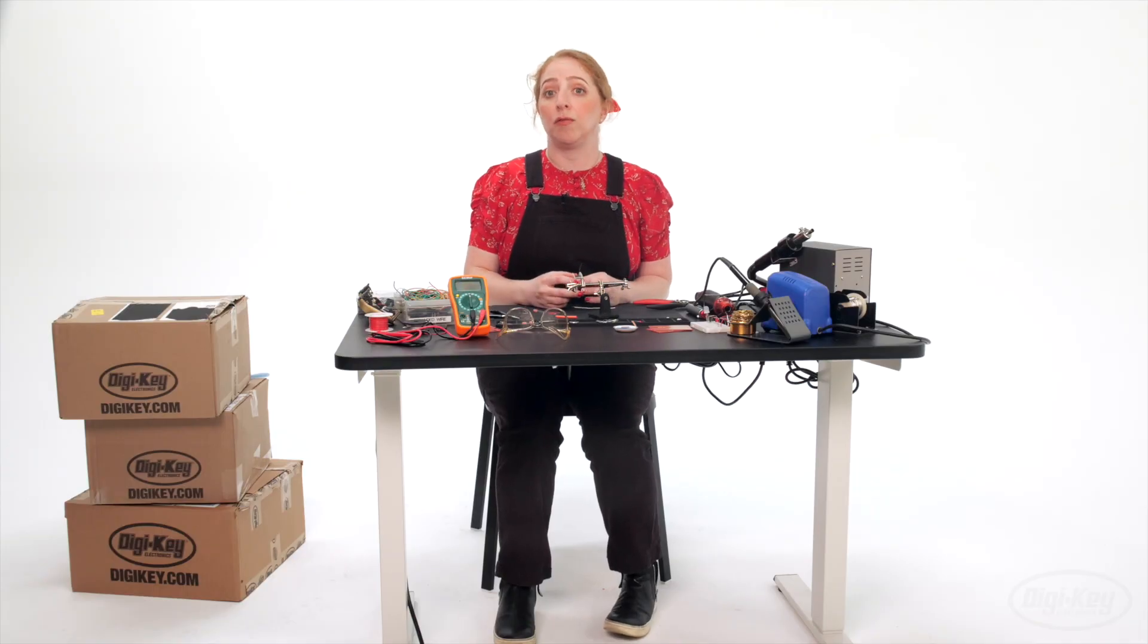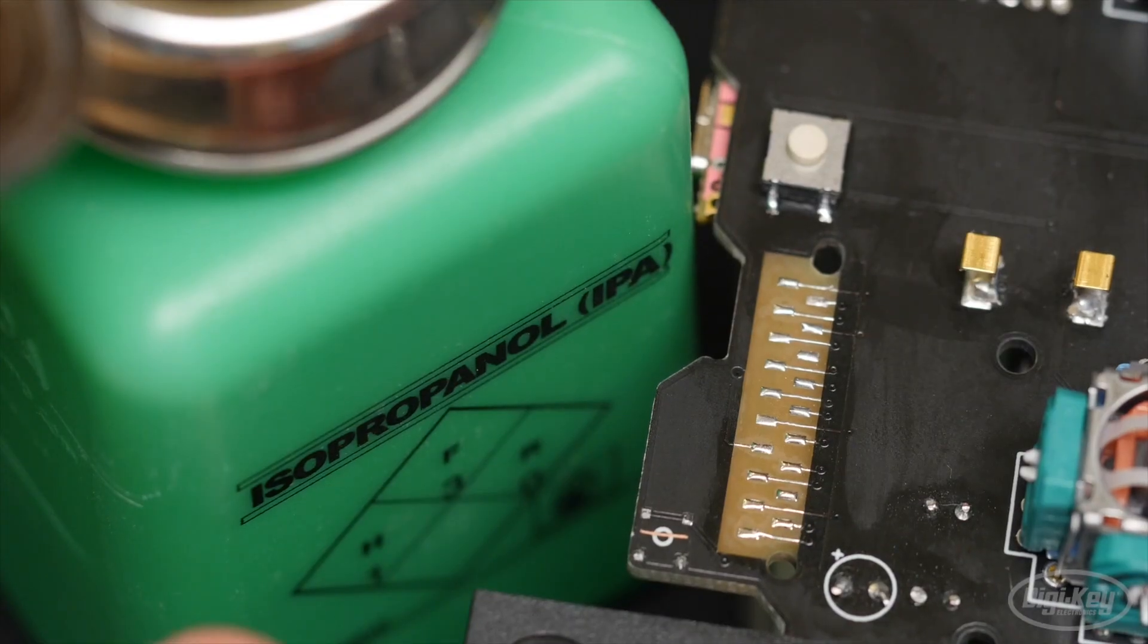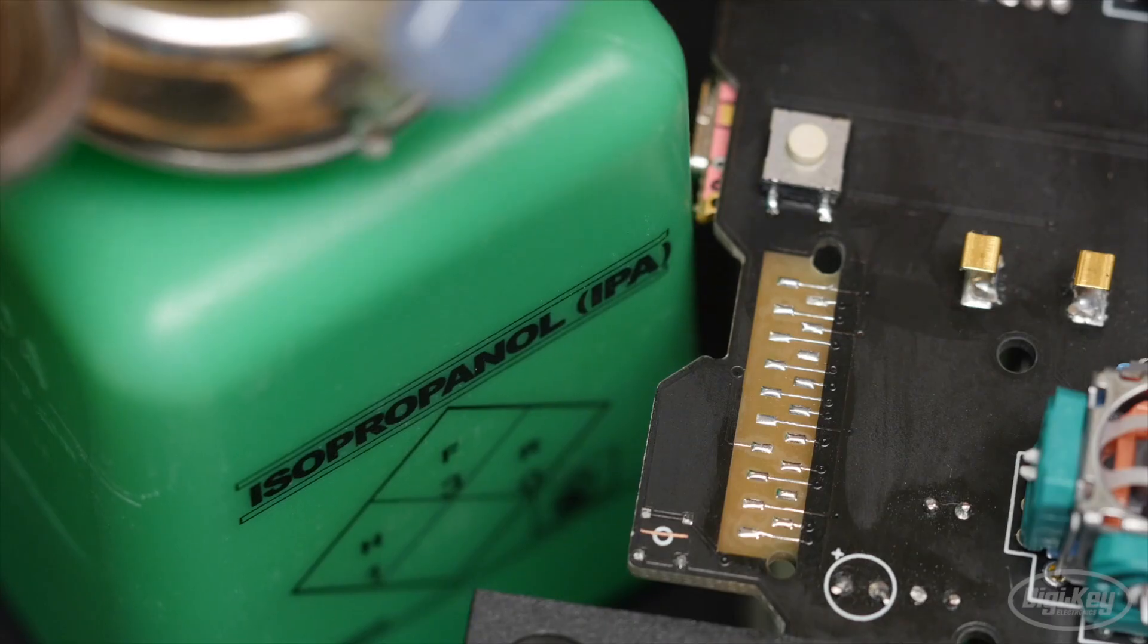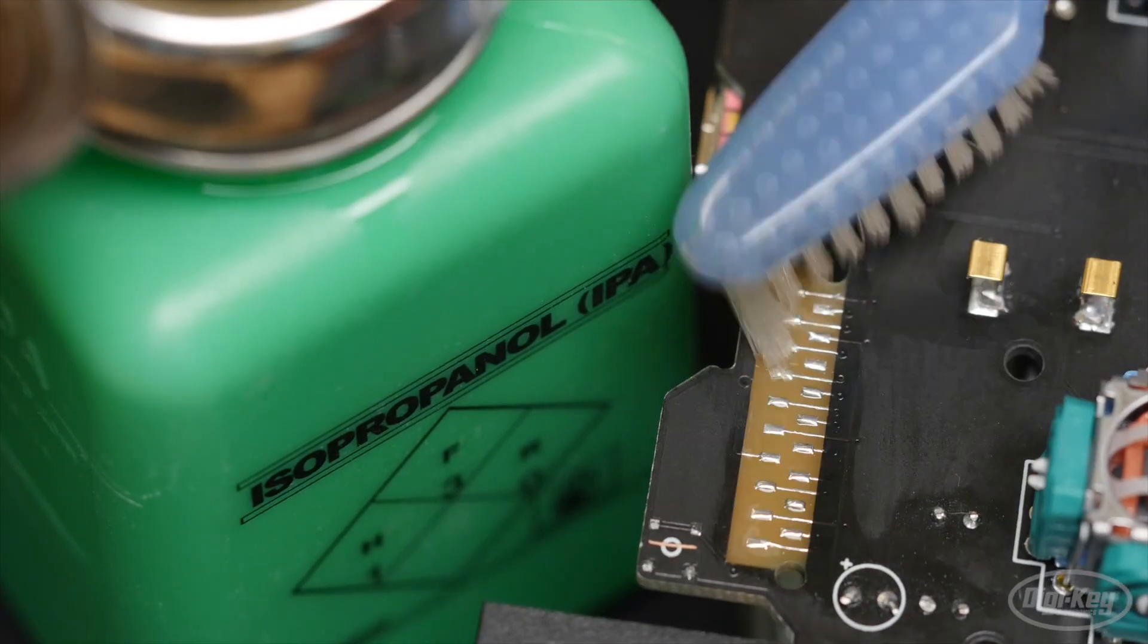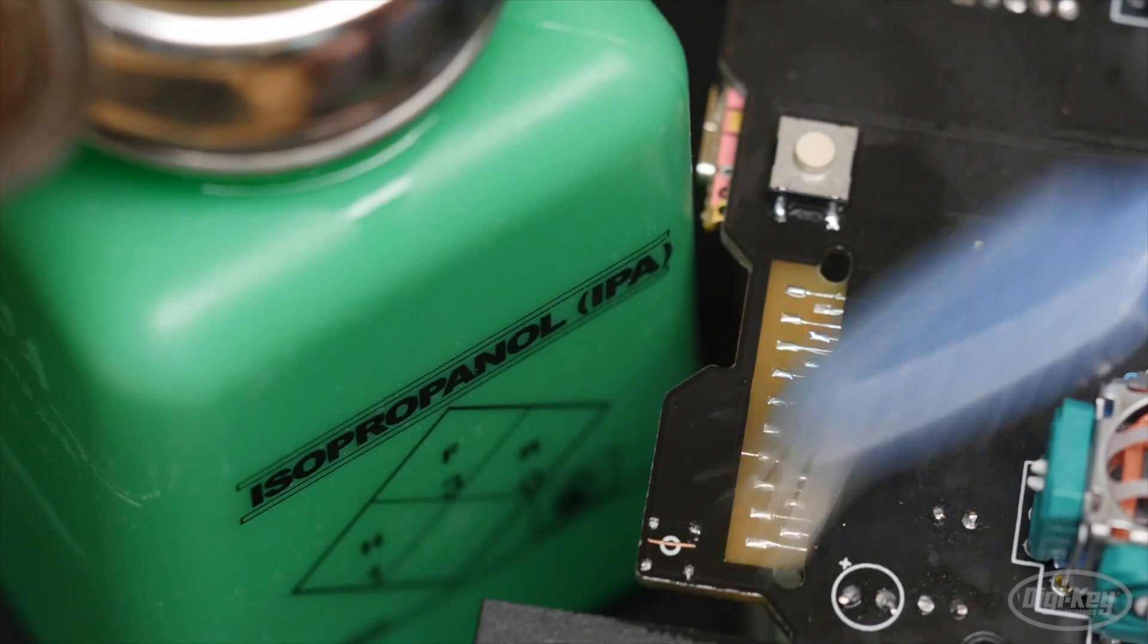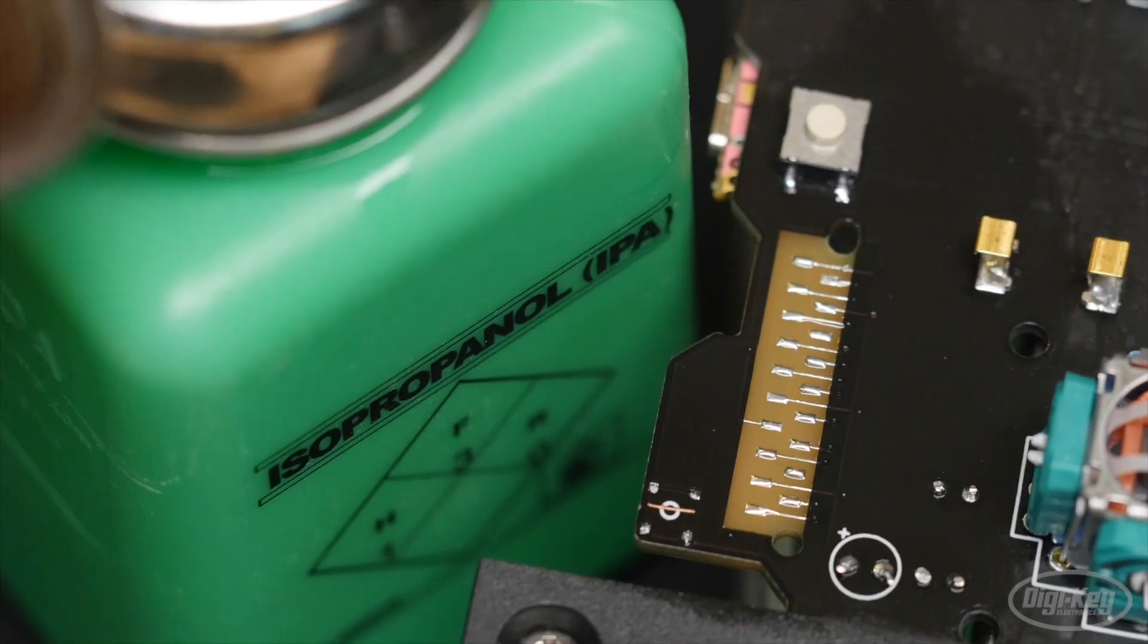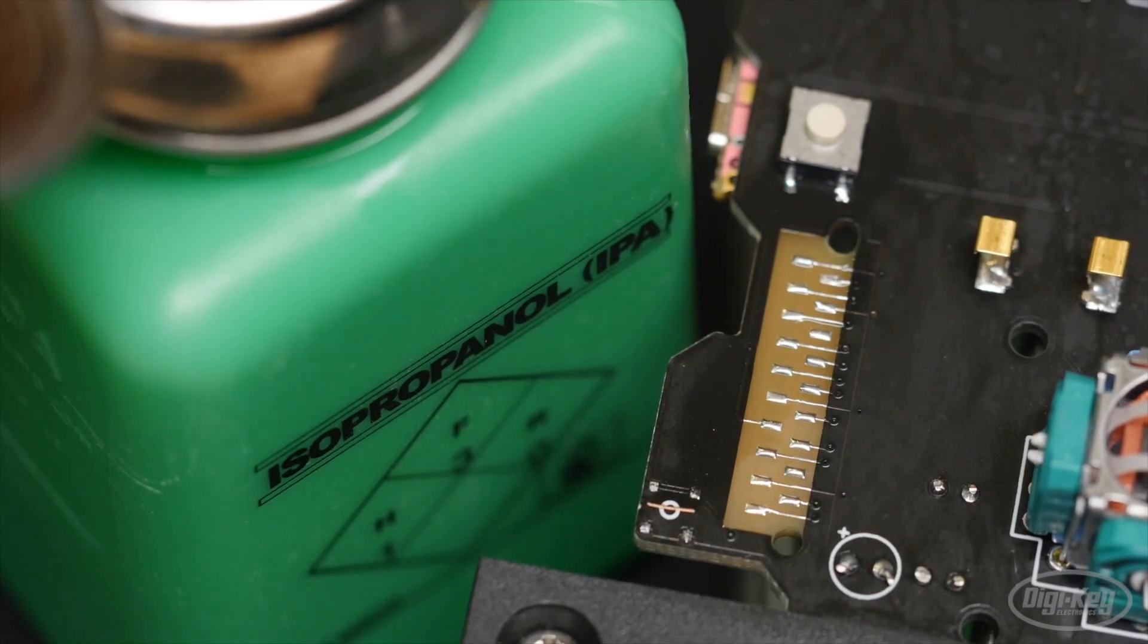They do make solid solder with separate flux, though, which usually has to be washed off with alcohol afterwards. That's because, at the very least, it's ugly and sticky, and at the worst, it can absorb ambient moisture and corrode the components and the PCB.